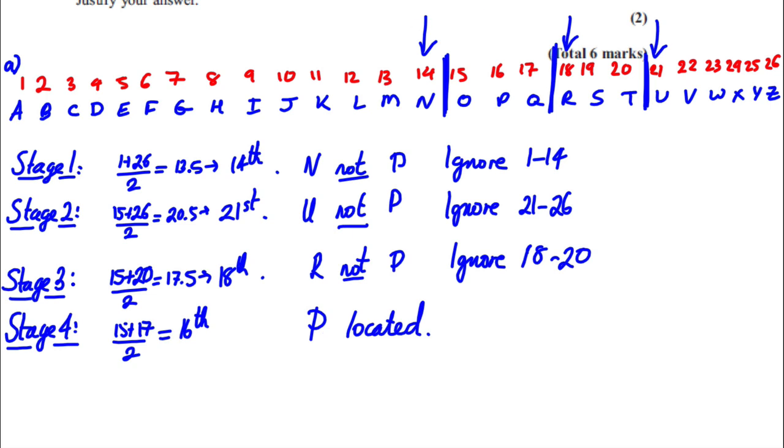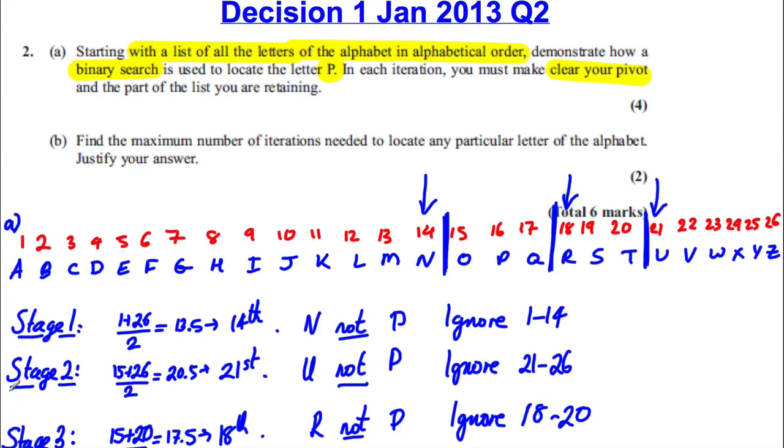Okay. So let's do part B now. Part B asks us, find the maximum number of iterations needed to locate any particular letter of the alphabet. What could the maximum number be? Well, let's think about it. Where would, for example, it take us, where would the quickest letter be for us to find? Clearly, because the way we do a binary search, the first item we look for is the 14th one. If N was the one we were looking for, that would be the first. Now, what would take us the longest to get to? Well, A would, because we halve the list and halve it again. This takes the most times to halve it.